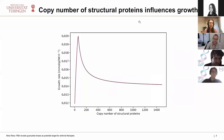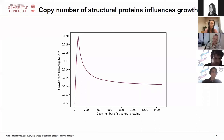Before diving deeper into metabolic changes, I want to note that the copy number of structural proteins was not known and it influenced the growth of the virus. To investigate this influence, we calculated the growth rate in relation to the copy number of structural proteins, varying from 1 to 1,500. Around a copy number of 500 we reach equilibrium or steady state of the virus growth rate. We conducted all further analyses with varying copy numbers to strengthen our findings.